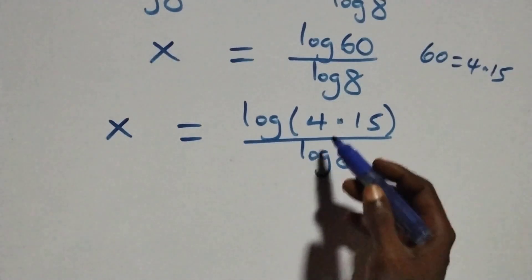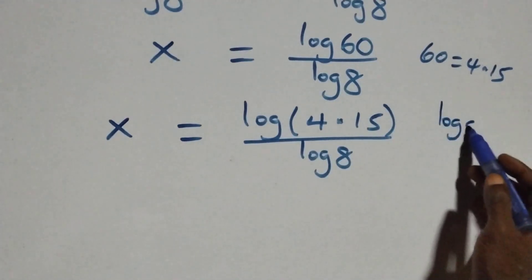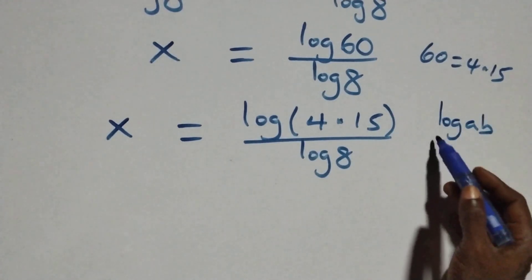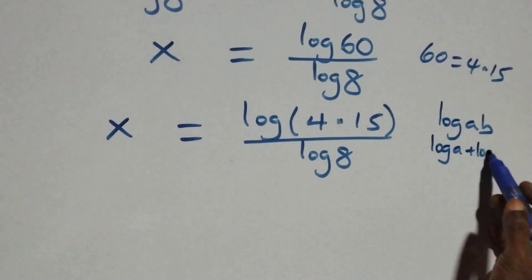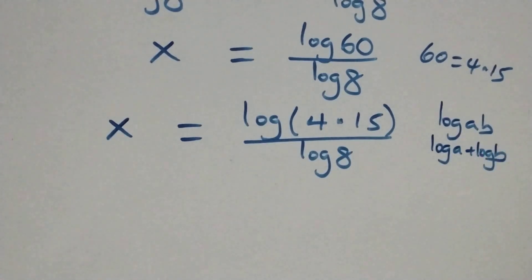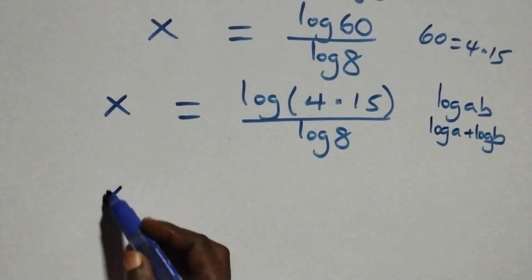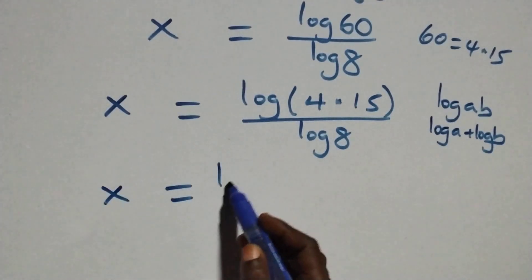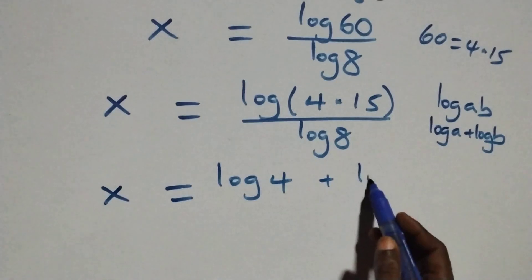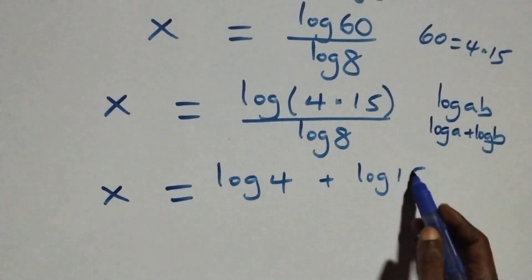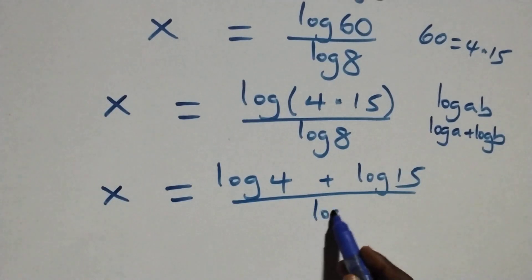Then this follows from the log rule: we have log a times b, which is the same thing as log a plus log b. That is, here we have x equals to log 4 plus log 15 over log 8.